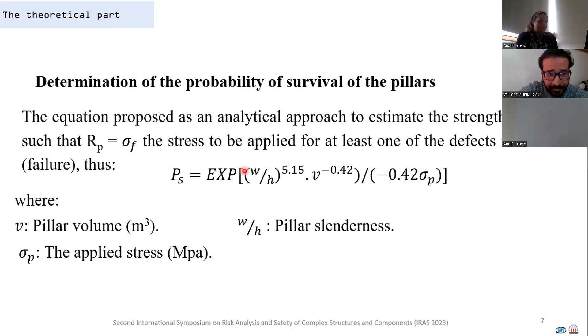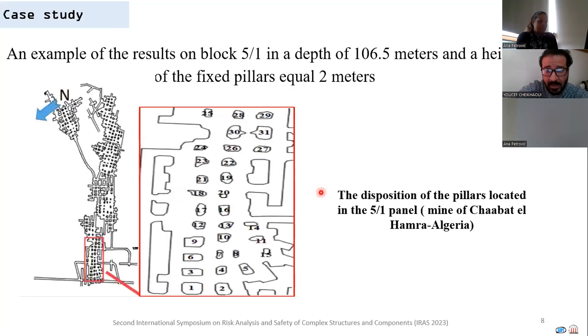As a case study, an example of 29 pillars in block 5-1 in Chaabat el-Hamra underground mine in Algeria.